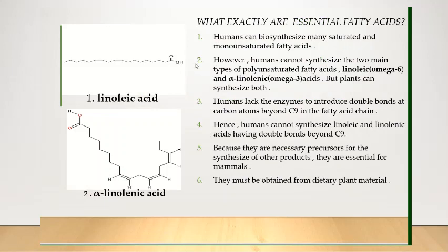Why exactly are essential fatty acids not produced in the body? Humans can synthesize many saturated and monounsaturated fatty acids, but they cannot produce two main types of polyunsaturated fatty acids — linoleic and linolenic acid. The main reason is that humans lack enzymes to introduce a double bond at a carbon atom beyond C9 in the fatty acid chain. Here in the diagram you can see these double bonds are introduced beyond C9 in the chain, and the enzymes to produce these double bonds are not present in the body. Hence, these acids are not produced in the body, but they are necessary precursors for synthesis of other products and are therefore essential for mammals.